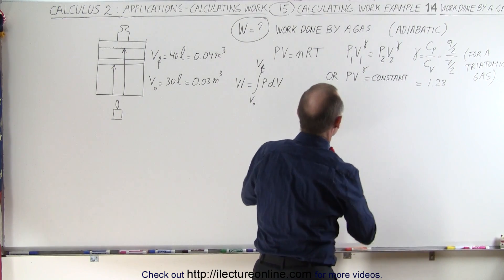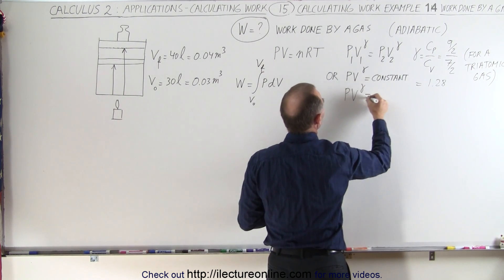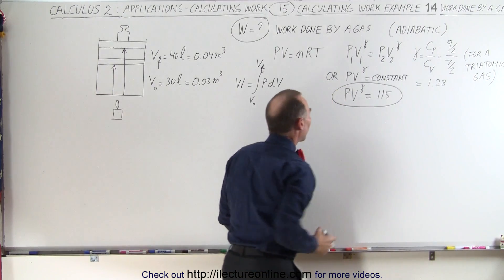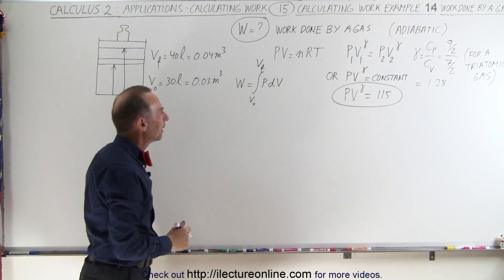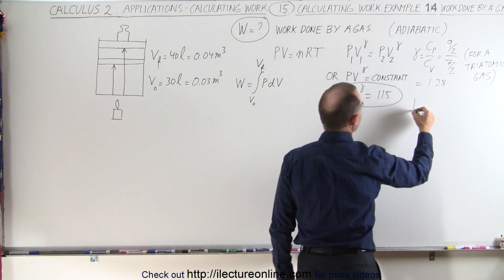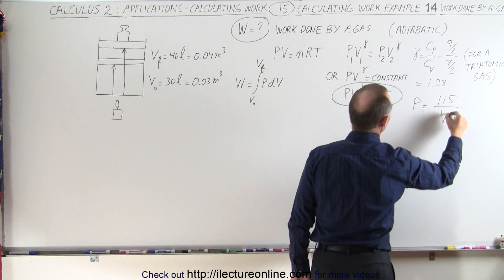Let's say for the moment that pv to the gamma is equal to 115. We'll just grab a constant and use that to solve our problem. Now what we need to do is solve for p, and therefore p can be written as that constant 115 divided by v to the gamma.